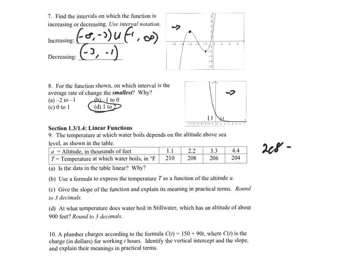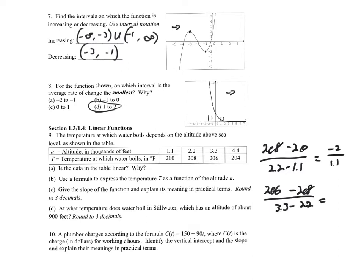First: 208 minus 210 over 2.2 minus 1.1 gives negative 2 over 1.1. Then: 206 minus 208 over 3.3 minus 2.2 also gives negative 2 over 1.1. Since the slope is the same between both pairs of points, yes, we know the data is linear.